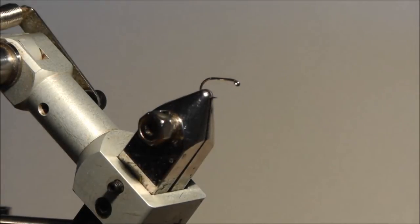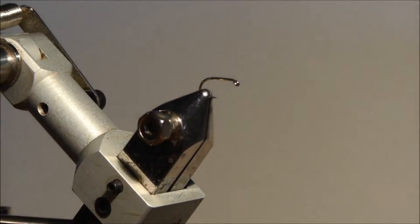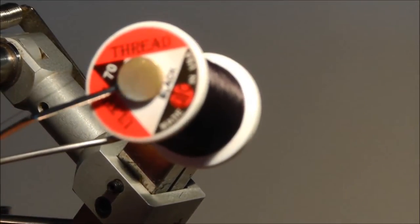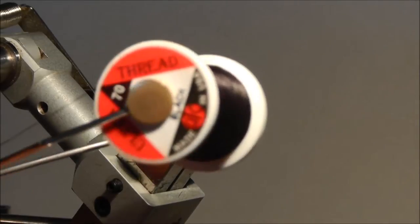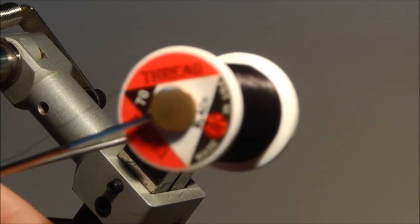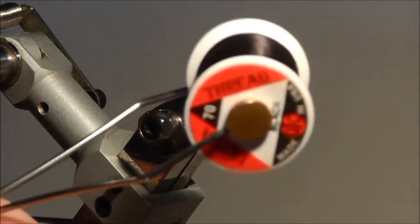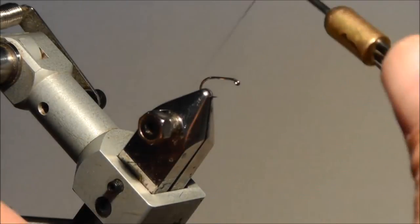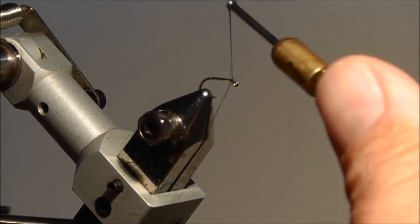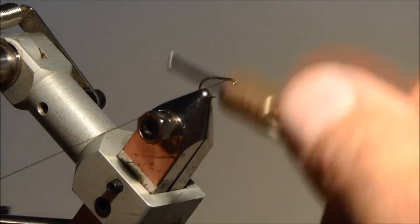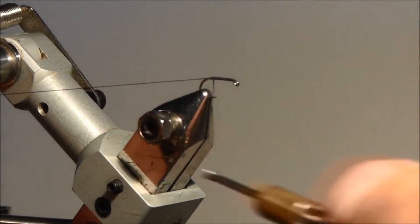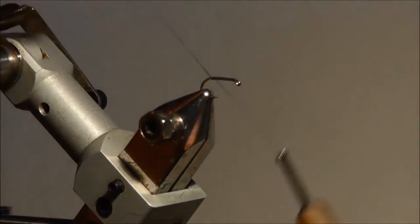Okay, first of all we set up a thread. I use a thread, in this case a 70 from Wapsi. It doesn't matter what kind of thread you're using as long as you can split it, that's important. So we set up the thread from the hook shanks and we just lay a base of thread on the hook shanks all the way into the bend.